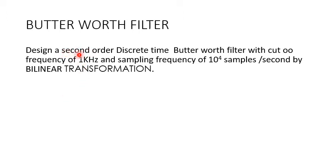The order of the filter is given as second order, so we can conclude n = 2. The cutoff frequency is 1 kilohertz, and the sampling frequency is 10^4 samples per second. The complete specification is given with respect to analog frequency, and they are asking us to design a digital filter.